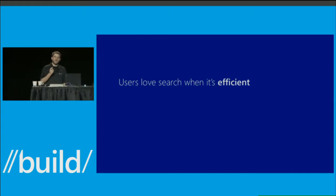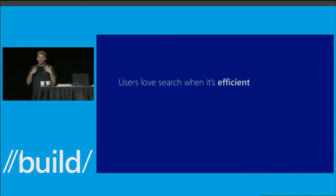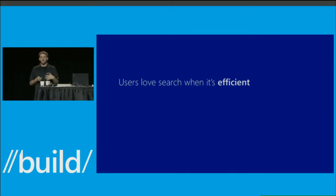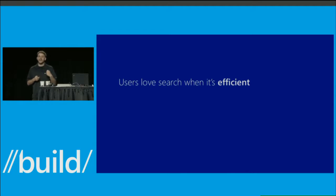If a user decides what it is they want to do, our job as software designers is to help them get to that thing as fast as possible — and search is the way to do it. The whole design language around Windows Store apps is about bringing your content first. Search is great at getting you specifically to the thing you already know you want. So designing the best search experience meant removing as many roadblocks as possible so that a user can get what they want as soon as they've decided they want it.